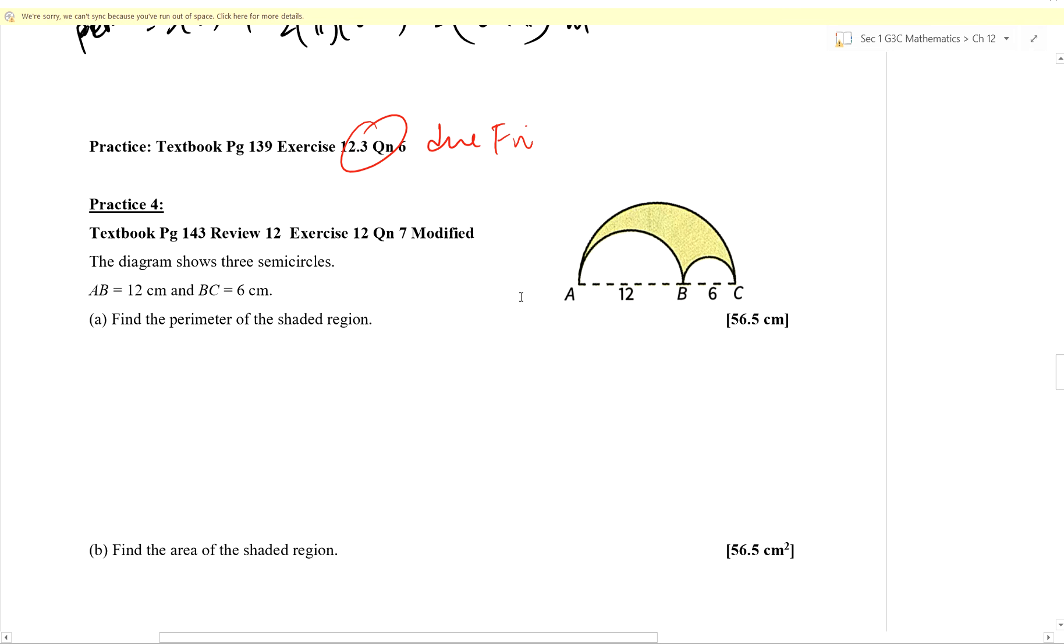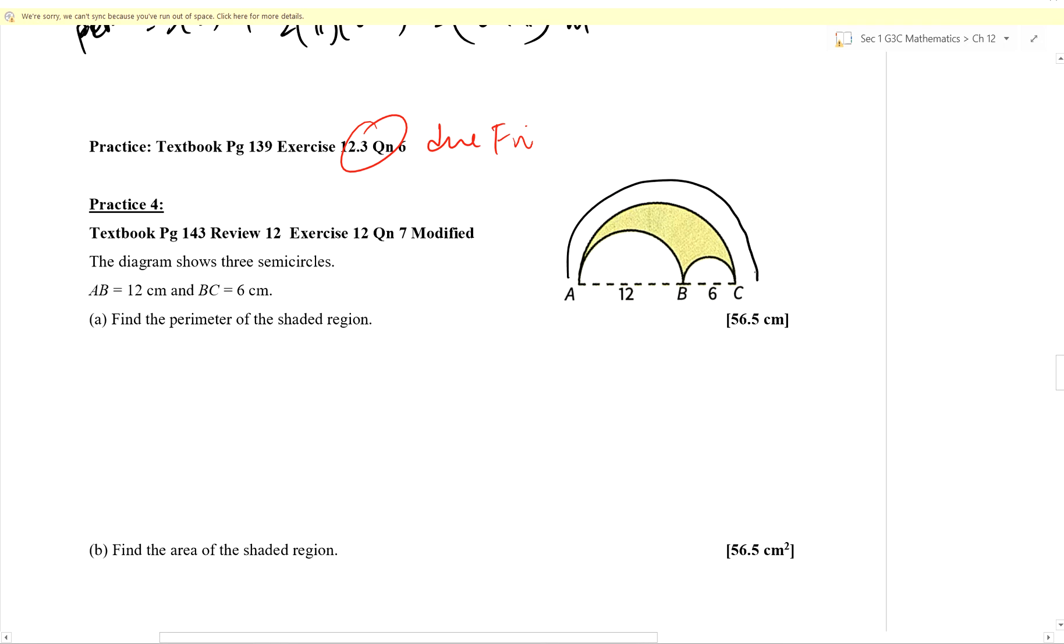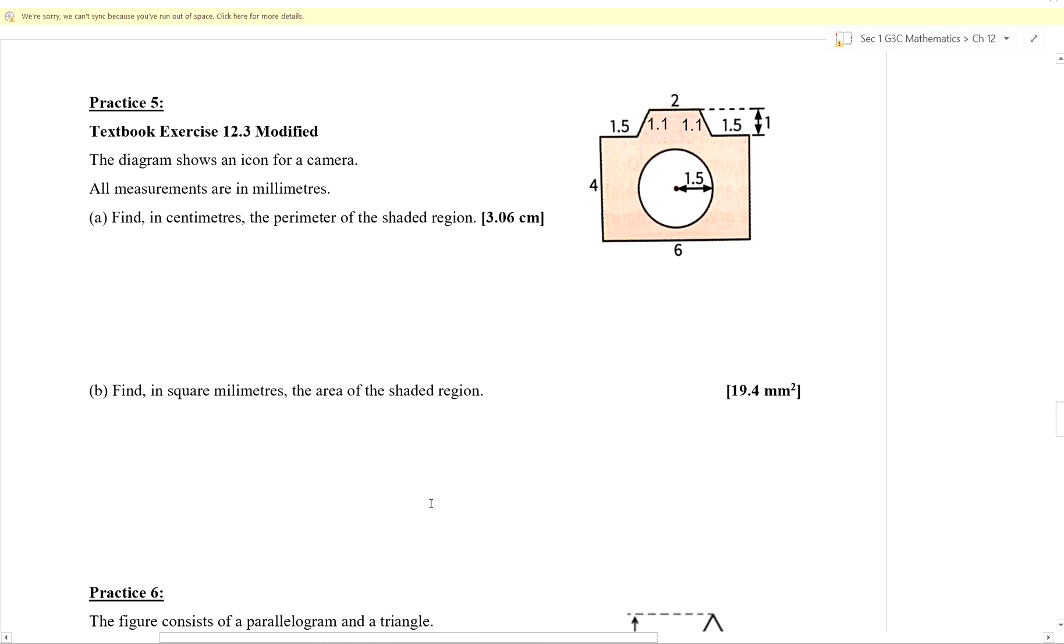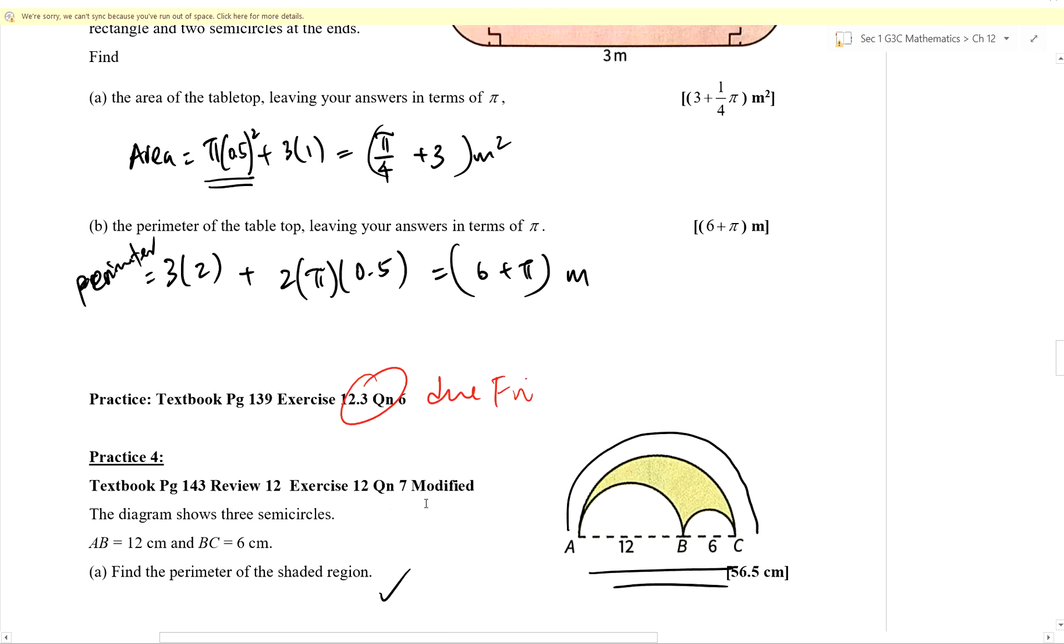Last number question. I've got 3 semicircles over here. Any issues with this? Anybody needs me to go through? If not, then the thing you need to take note for this question is that the bigger semicircle, the largest semicircle, has a diameter of 18. Therefore, its radius is 9 centimeters. So with that, we should be able to get the perimeter, we should be able to get the area of the shaded region.